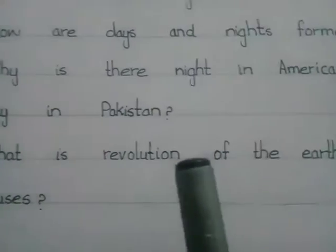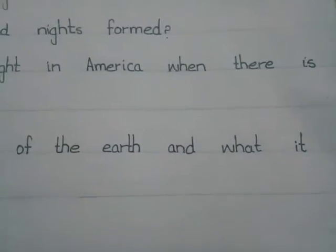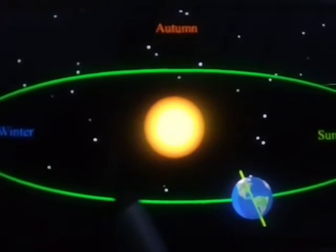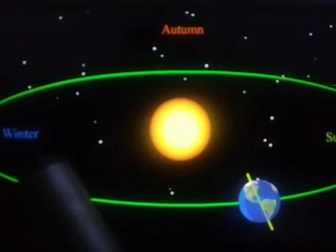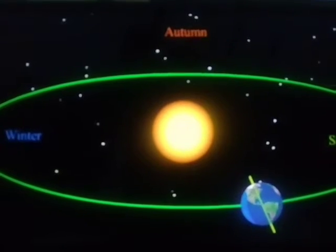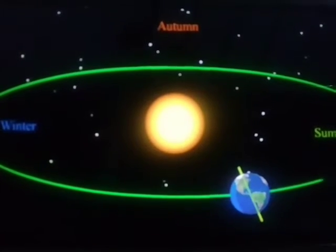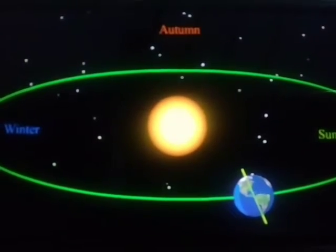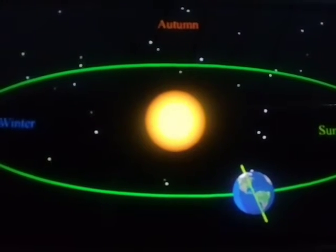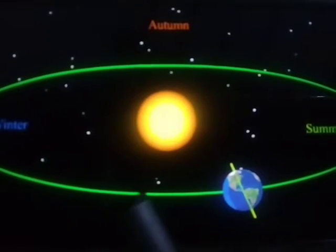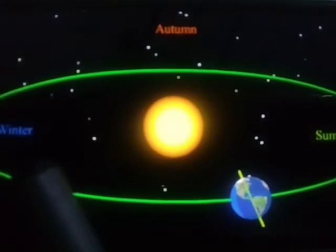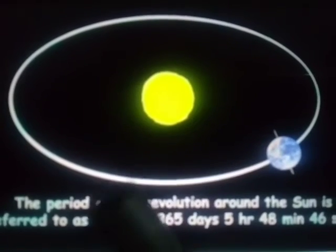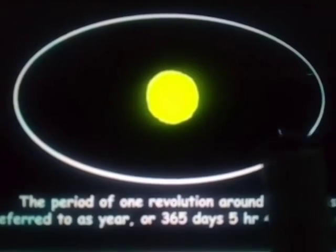Question number four is: what is the revolution of the earth and what does it cause? The movement of the earth around the sun is called revolution, and the path the earth takes around the sun is called its orbit. The earth completes one revolution around the sun in about 365 days, and these 365 days make one year.